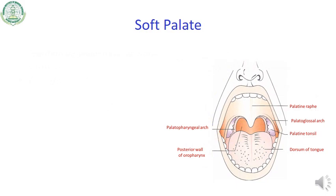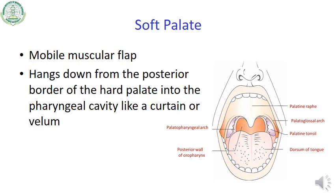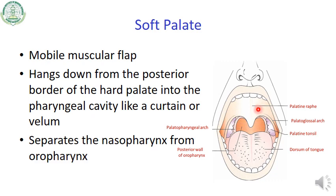Now we will come to the actual topic of today's lecture: the soft palate. What is the soft palate? It is a mobile muscular flap in the oral cavity, suspended from the posterior border of the hard palate. It hangs down from the posterior border of the hard palate into the pharyngeal cavity like a curtain or velum. It separates the nasopharynx from the oropharynx.